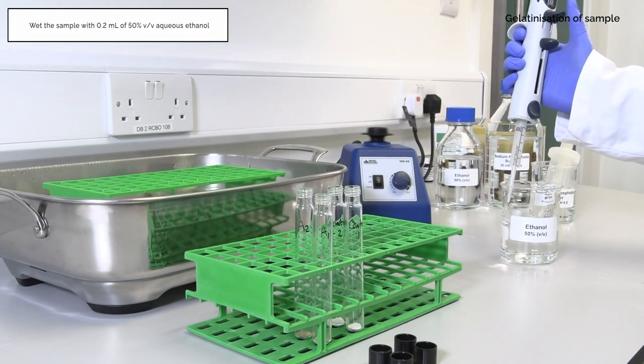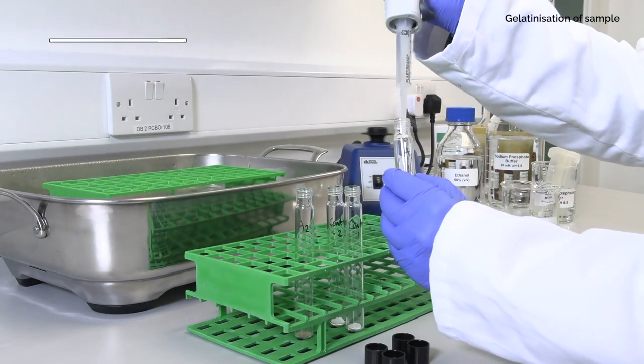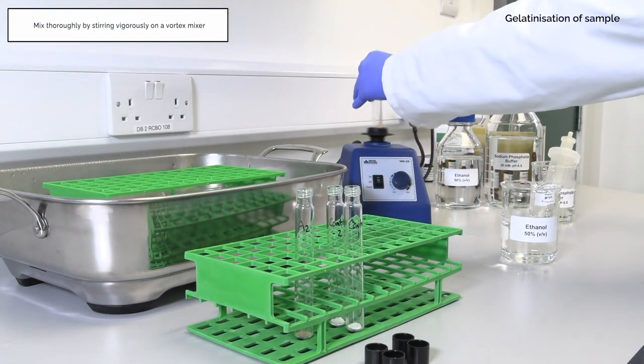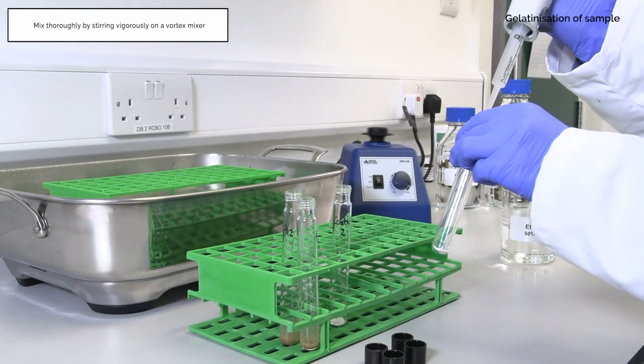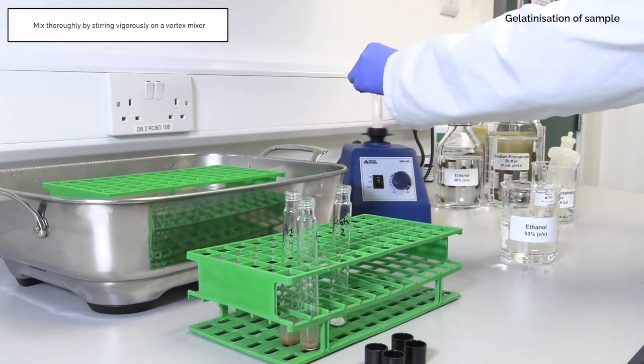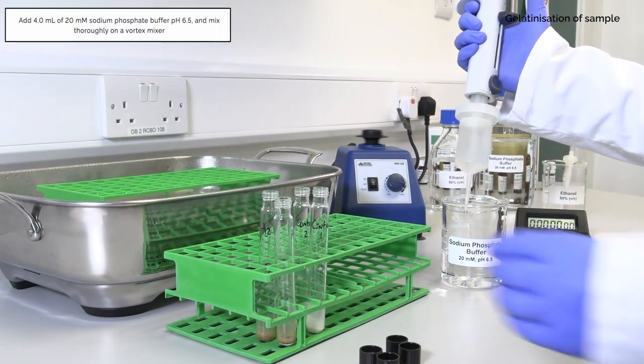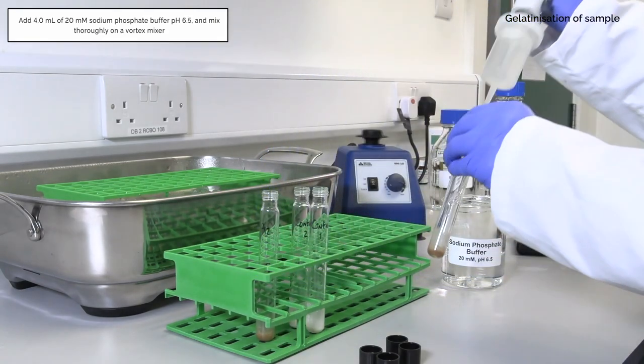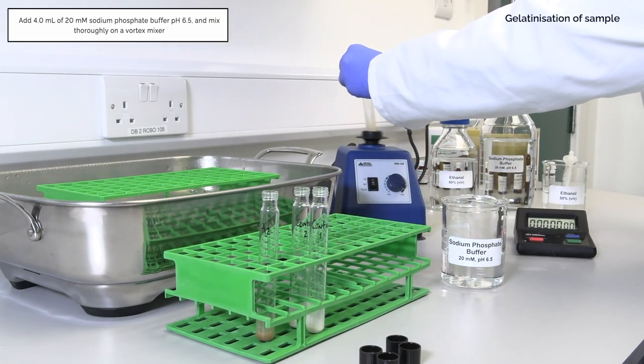Wet the sample with 0.2 milliliters of 50% volume per volume aqueous ethanol. Mix thoroughly by stirring vigorously on a vortex mixer. Add 4 milliliters of 20 millimolar sodium phosphate buffer pH 6.5 and mix thoroughly on a vortex mixer.